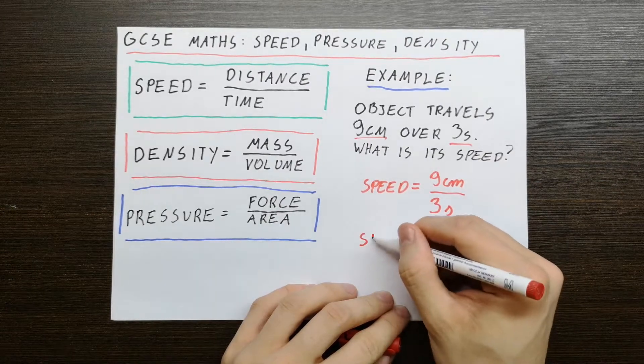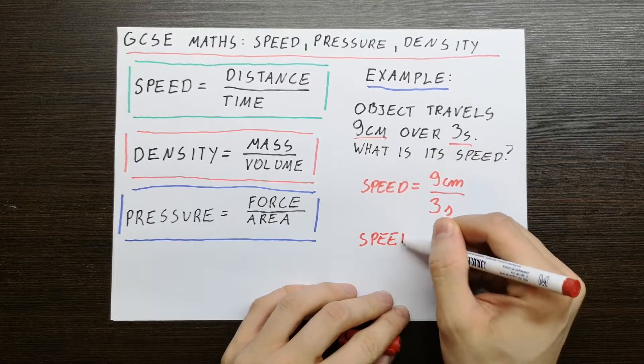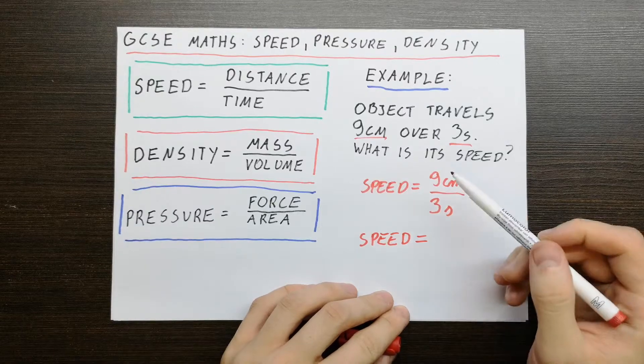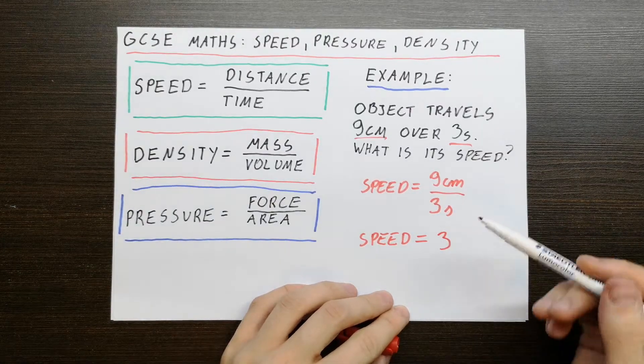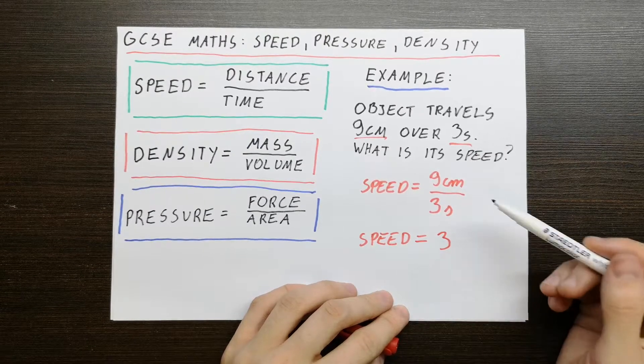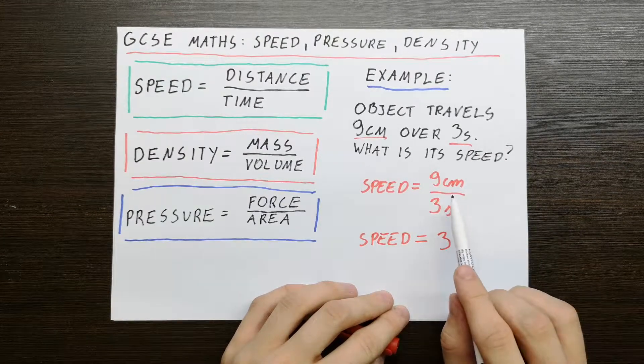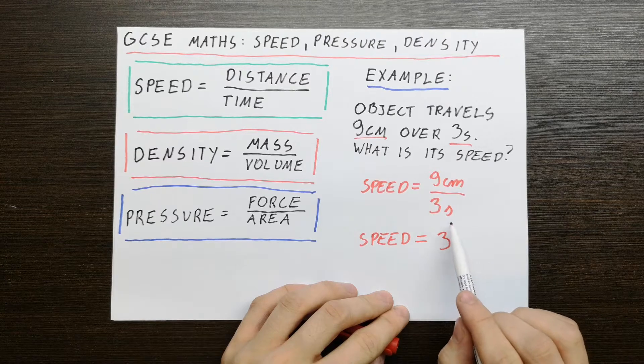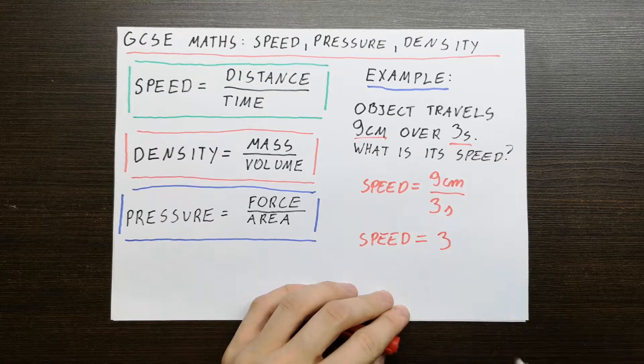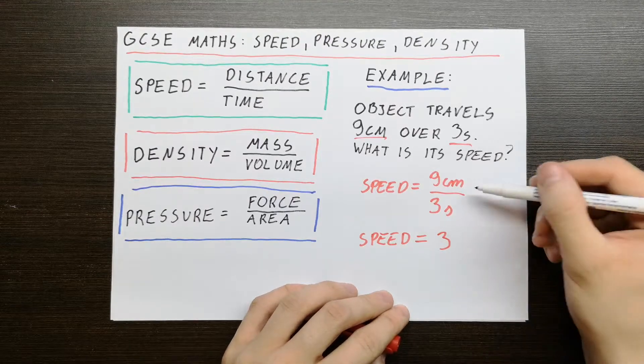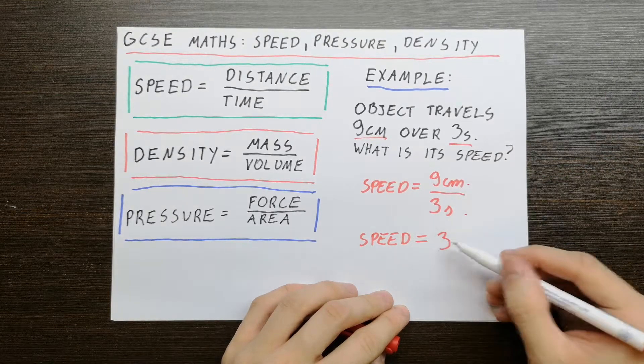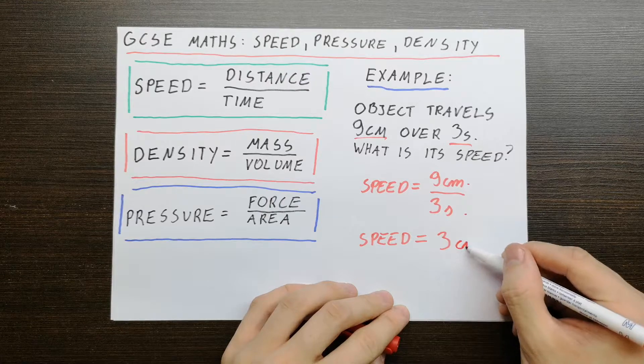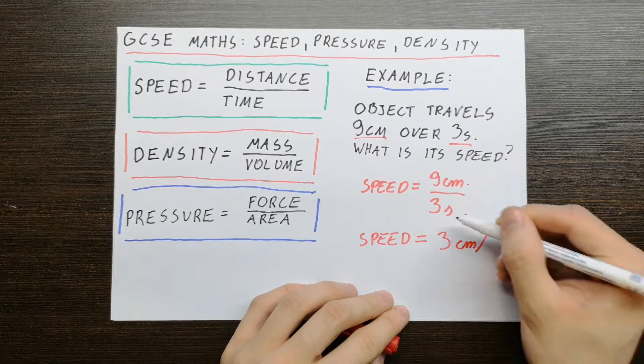So the speed is equal to 3. However, what units are we using? Well, for distance we used centimeters and for time we used seconds. So those are the units we have to use. We divided centimeters by seconds, so that is 3 centimeters per second.